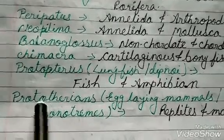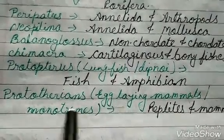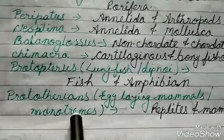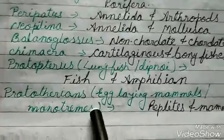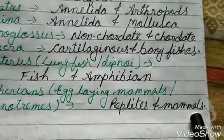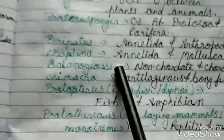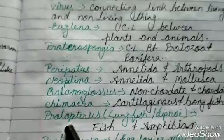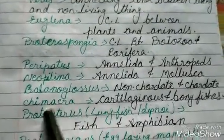Prototheria are egg-laying mammals, also known as monotremes. These are the connecting link between reptiles and mammals. So these were some examples of connecting links — the animals which show connecting link characteristics.